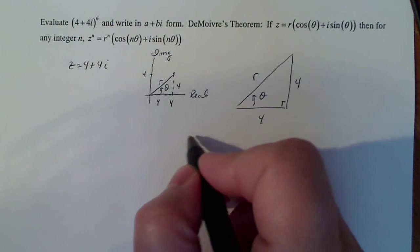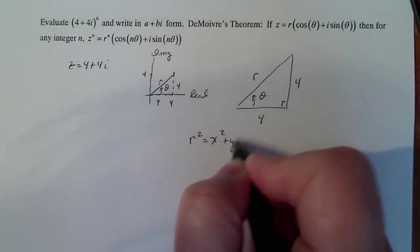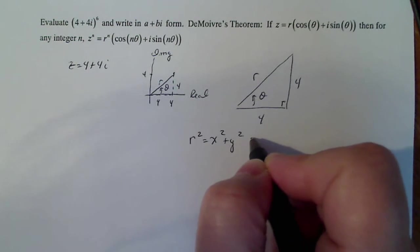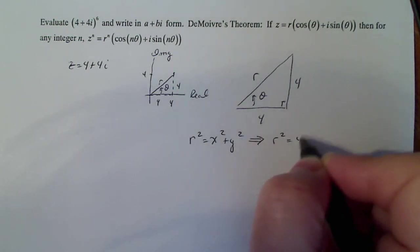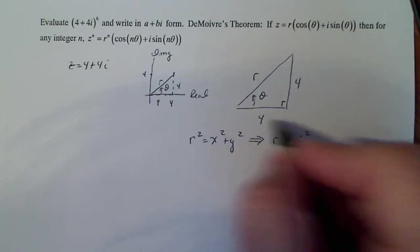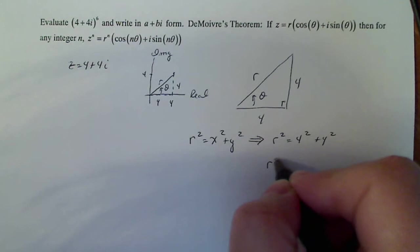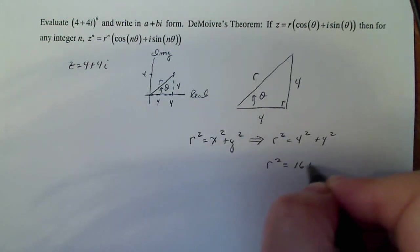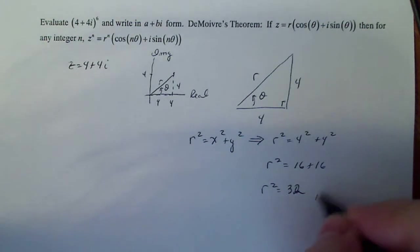So according to that conversion, I know that r squared is equal to x squared plus y squared. So in this case, that implies that r squared is equal to 4 squared, which is this side plus 4 squared, which is this side. So r squared is equal to 16 plus 16, r squared is equal to 32. I'm sorry, 32 is right, I don't know why I wrote 36.